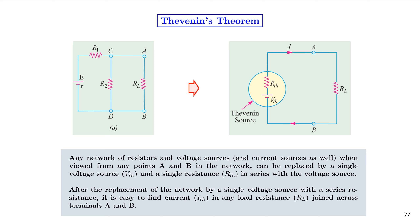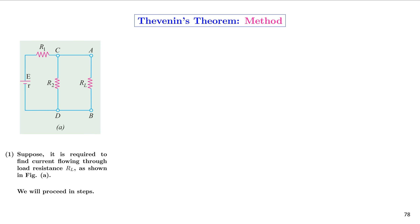We can state Thevenin's theorem more formally: any network of resistors, voltage sources, and current sources, when viewed from points A and B, can be replaced by a single voltage source Vth and a single resistance Rth in series with the voltage source. After this replacement, it is easy to find the current Ith — the Thevenin's current — in any load resistance RL joined across terminals A and B.